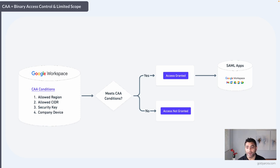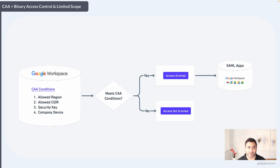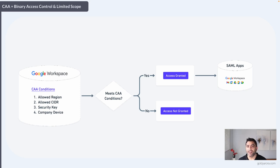Assuming you already have context-aware access in place, you can create policies to allow or deny access to Google Workspace resources. To understand why you need BeyondCorp, let's look at the nature of context-aware access: it has two key limitations. First, the access control is binary — based on context, a user will either have access or will not have access to a certain set of applications. Second, there is a limited scope to what context-aware access can be applied to.